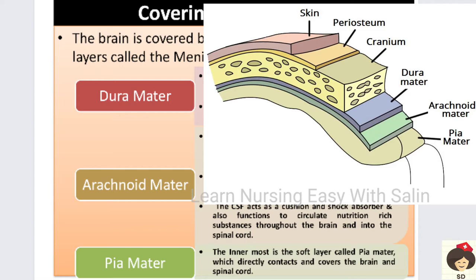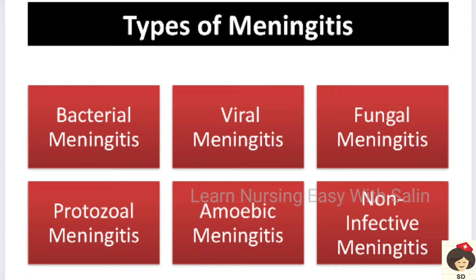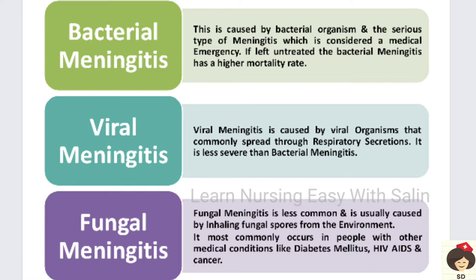The types of meningitis, classified according to the causative organism, include bacterial, viral, fungal, protozoal, amoebic, and non-infective meningitis — as per the CDC (Centers for Disease Control). Bacterial meningitis is a very serious type requiring immediate medical attention; without it, the mortality rate is high. Viral meningitis is caused by viral agents and is most commonly spread through respiratory infections — for example, Haemophilus influenzae virus is common in the respiratory tract.